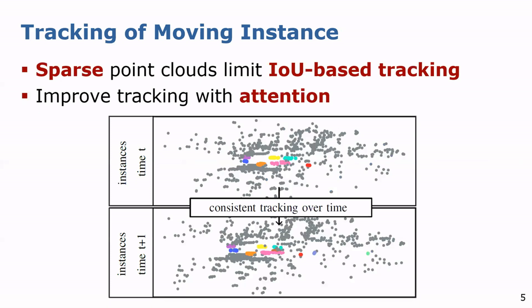Current state-of-the-art methods often address moving instance tracking within aggregated scans and associate instances in existing tracks based on the intersection over the union score. However, the processing of aggregated scans induces latency.